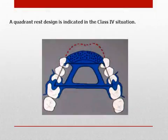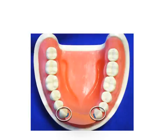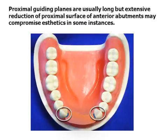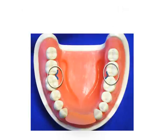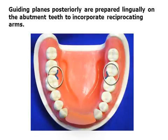A quadrant support type design is indicated in the Class 4 situation. Proximal guiding planes are usually long, but extensive reduction of proximal surfaces of anterior abutments may compromise aesthetics in some instances. Posterior guide planes are prepared lingually on the abutment teeth and incorporate reciprocating arms.